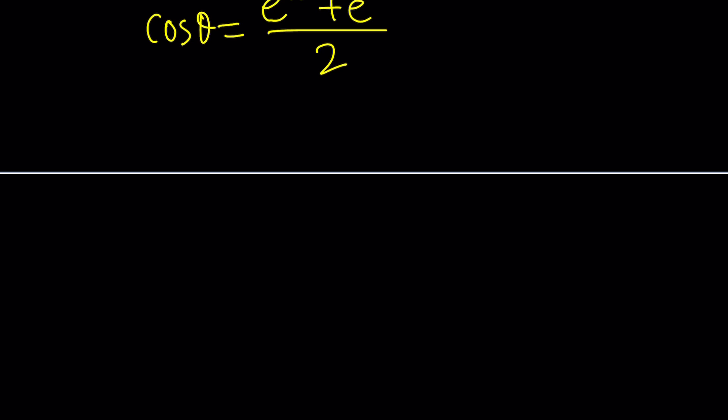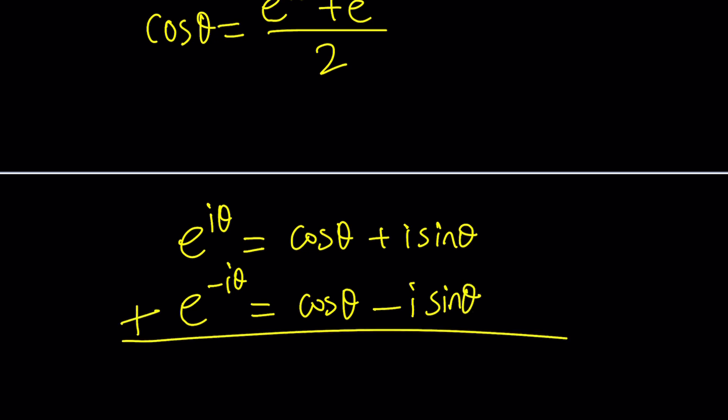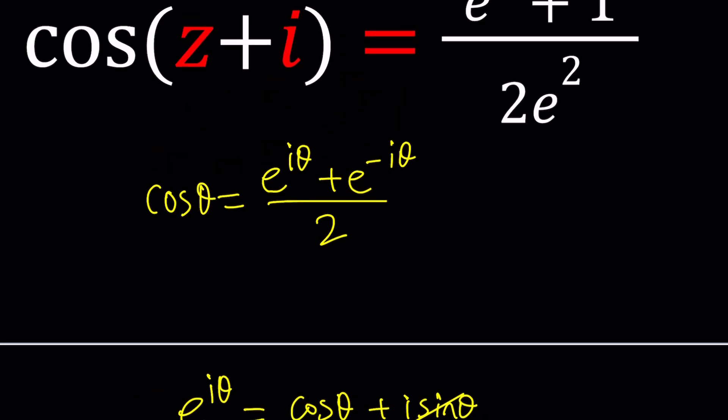So it comes from Euler's formulas. E to the i theta can be written as cosine theta plus i sine theta. Euler found out this expression, which is by the way beautiful, amazing, just mind-blowing, unbelievable. So cosine theta plus i sine theta and e to the power negative i theta. If you replace theta with negative theta, cosine is even so it's just going to absorb but sine has to spit it out. So it's going to look like this and then you go ahead and add these equations up, cancel out the sine and divide by two, you'll get the formula.